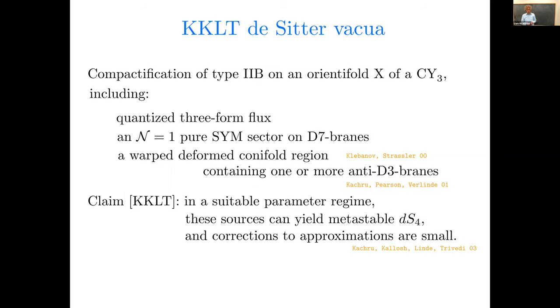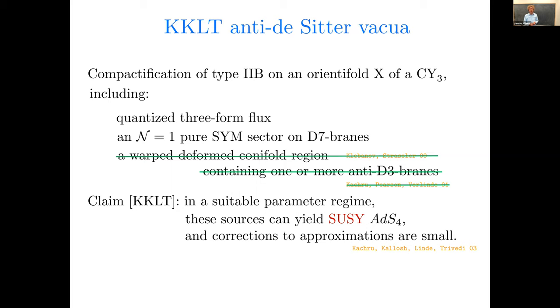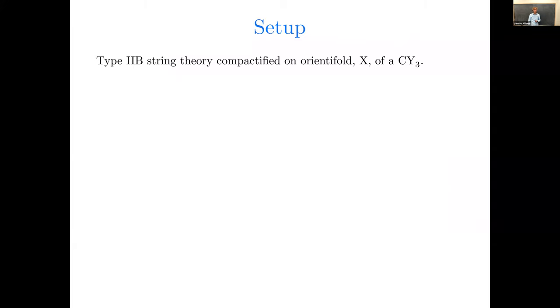Now we're not going to be treating de Sitter vacua, we'll be working with anti-de Sitter vacua, so let's modify things a little bit. If we omit the anti-d3 branes, we could include the warp-deformed conifold region or not, doesn't matter, then what we'll end up with is a supersymmetric ADS-4 vacuum. The task first is to understand that, and that's all I'll do in this talk.